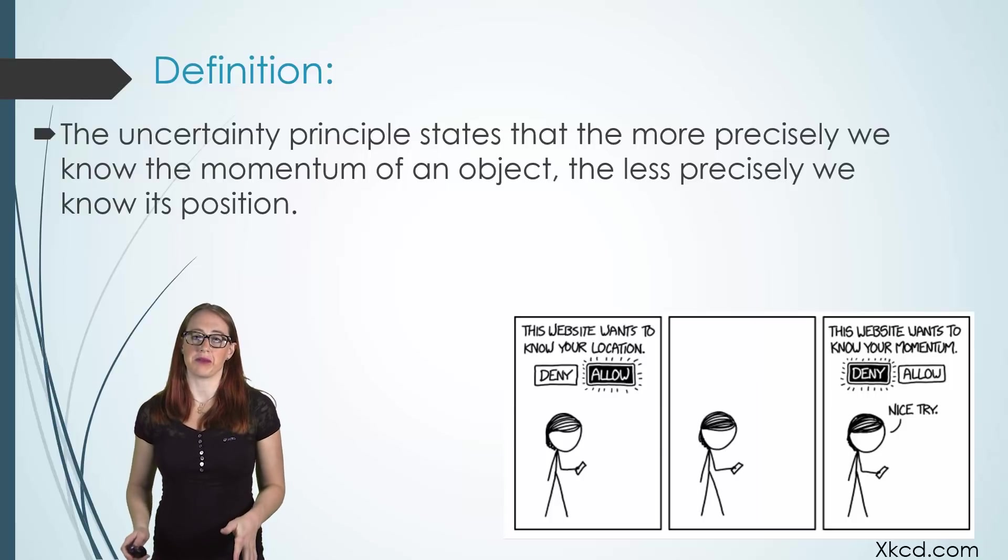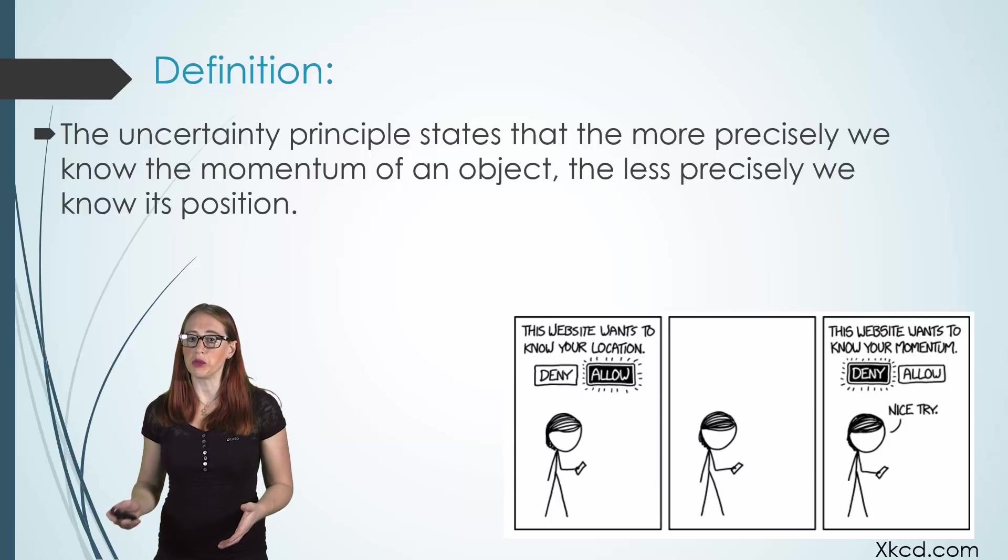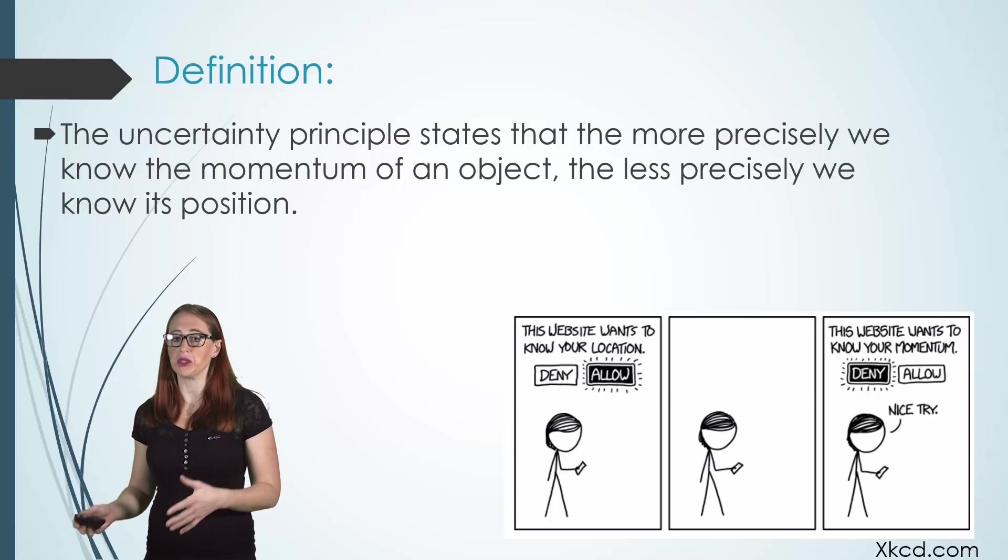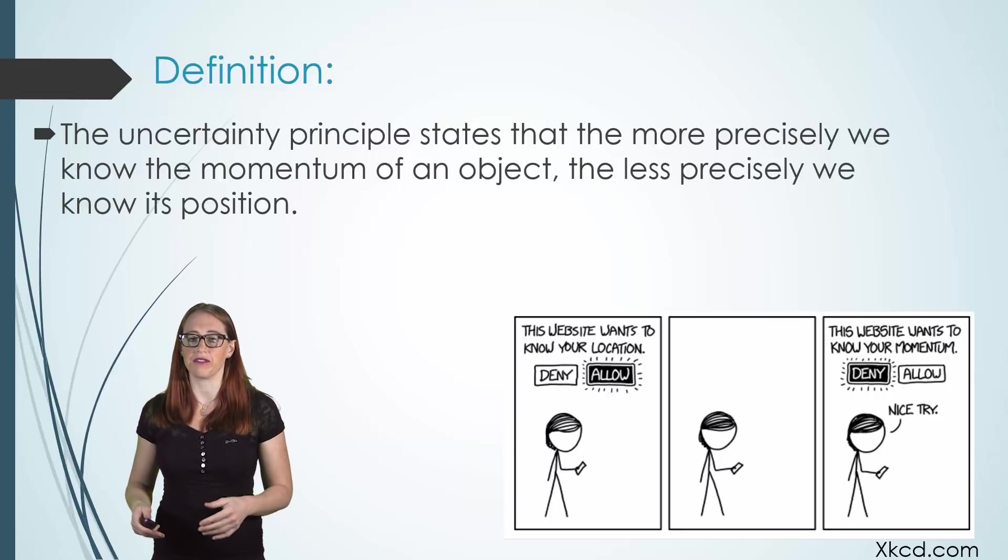Let's first define the principle. The uncertainty principle states that the more precisely we know the momentum of an object, the less precisely we know its position. In other words, if we knew where a particle was nearly exactly, we would have no idea how fast it was going. Or if we knew exactly how fast the particle is going, we'd have no clue where it was.